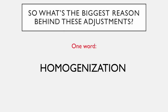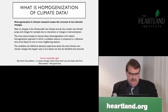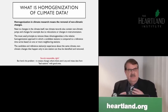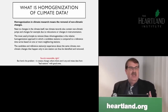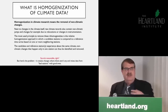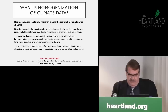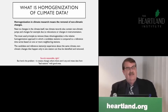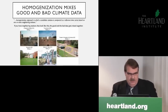Homogenization is the main reason that climate data goes from showing a little bit of warming to showing a lot of warming — that's where the alarm comes in. Homogenization is basically there to remove non-climatic changes in the data: things like changes in station location, changes in the way things were measured, change in the time of day measurements were taken. It seems like a reasonable approach, but here's the problem: it creates changes where there aren't any. It mixes data from bad nearby stations — maybe stations that have been compromised — with data from good stations, and you end up with a mix that isn't all that pure or pristine.